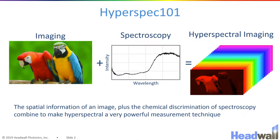Hyperspectral imaging combines the power of spatial imaging and the power of spectroscopy into a single technique that allows a scientist to leverage the chemical discrimination power of spectroscopy and the spatial discrimination of imaging, both at the same time, to give them maps of chemical content.